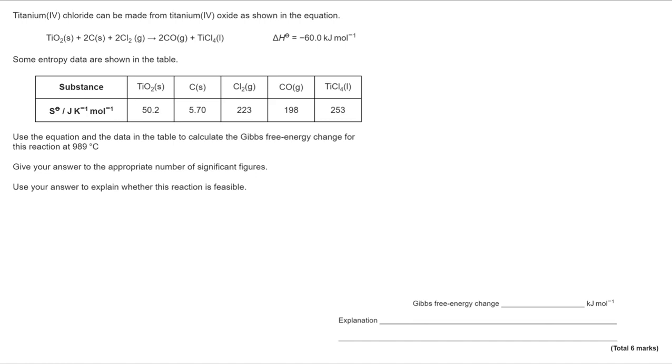Let's take a look at where we start. Well it makes sense to start with the table of data. Entropy change delta S is equal to the sum of the entropy of the products take away the sum of the entropy of the reactants.